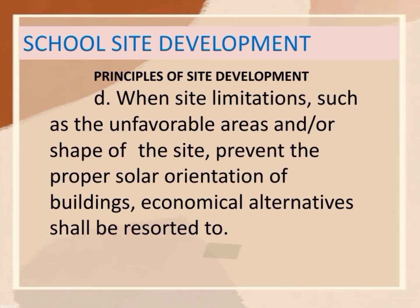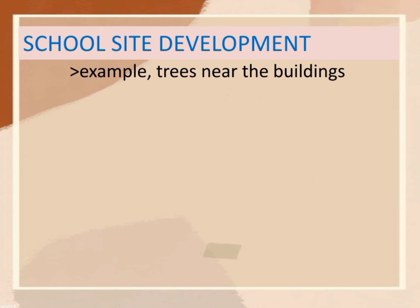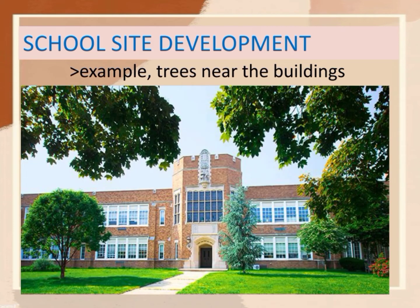Also, when site limitations such as unfavorable areas or shape of the site prevent the proper solar orientation of buildings, economical alternatives shall be resorted to. For example, trees near the buildings are effective for minimizing the direct entry of sunlight into instructional spaces.